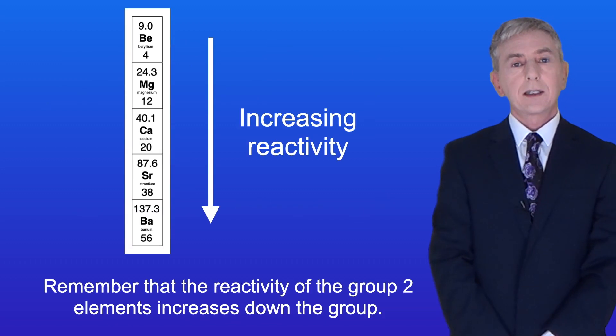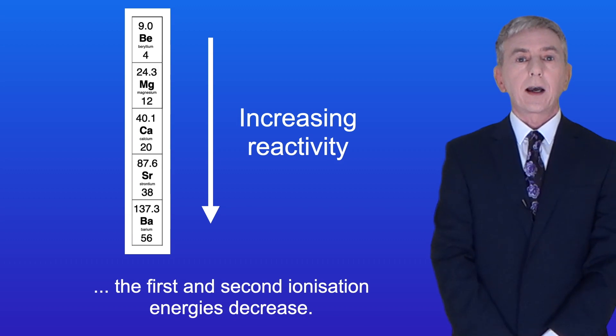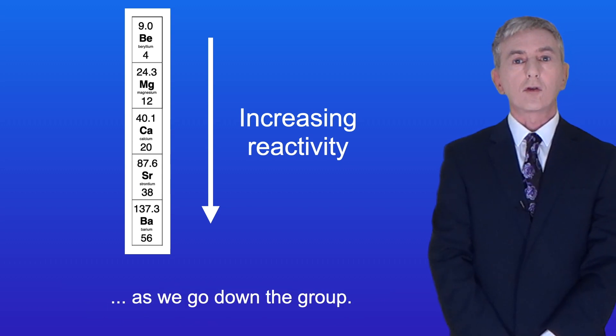Remember that the reactivity of the group 2 elements increases down the group. This is because moving down the group, the first and second ionization energies decrease, and this means that it requires less energy to lose the outer two electrons as we go down the group.